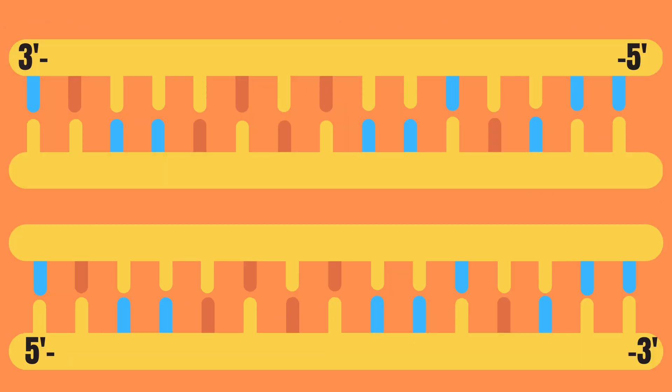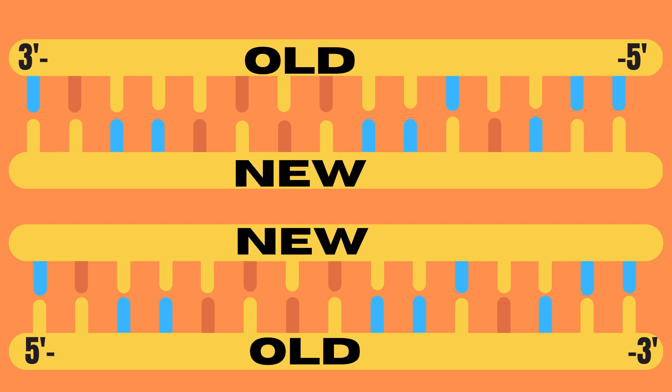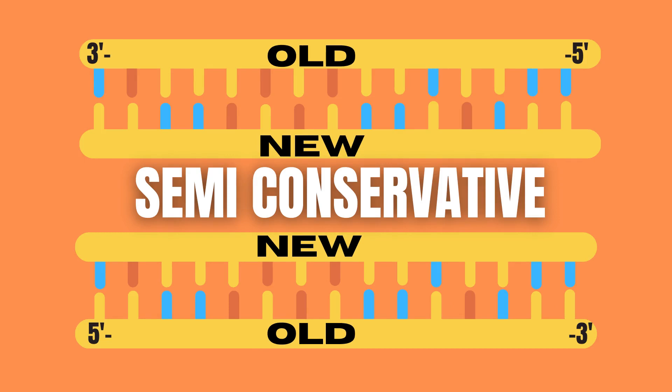After this whole process you end up with two identical new DNA molecules that contain one original strand and one new strand. The process is therefore said to be semi-conservative.